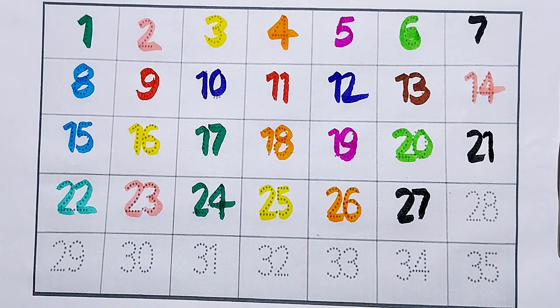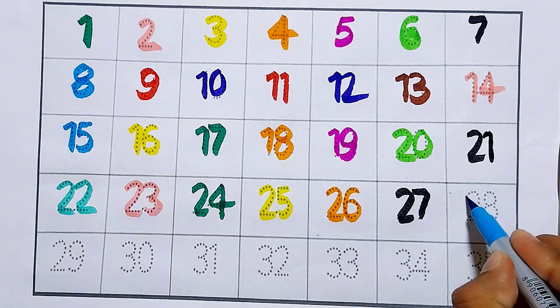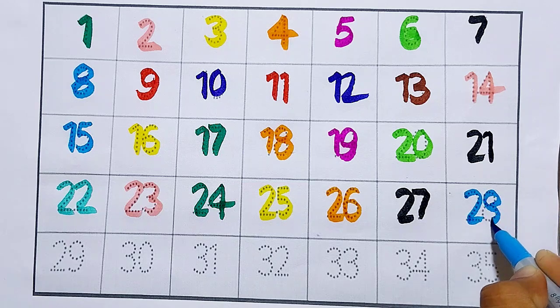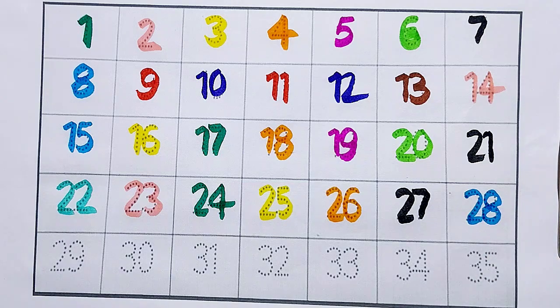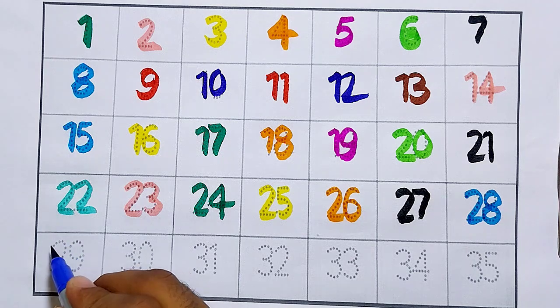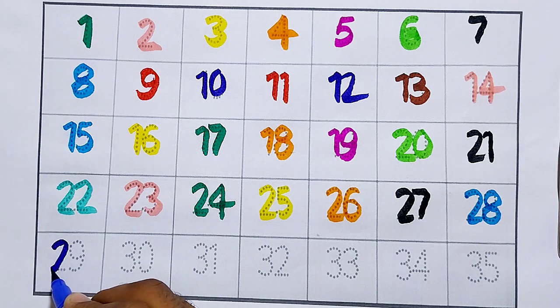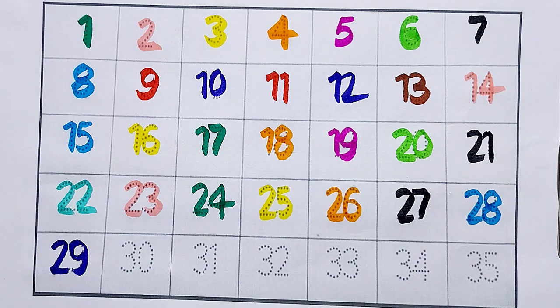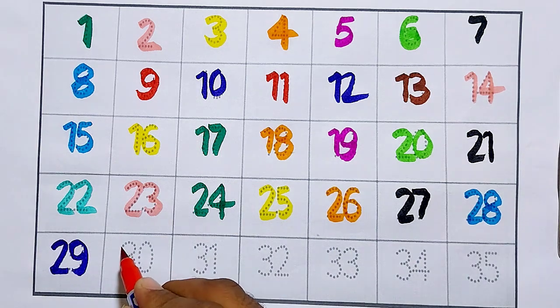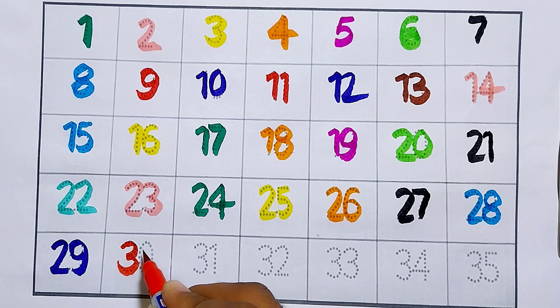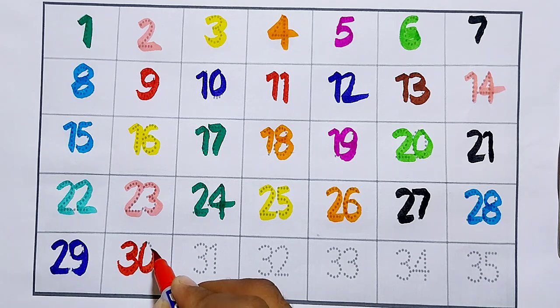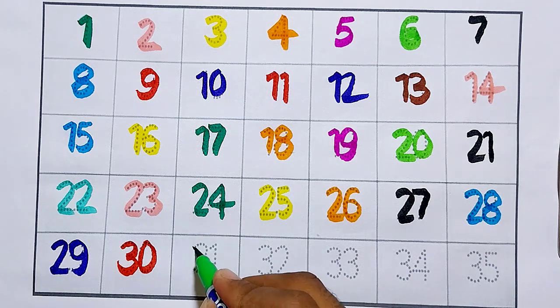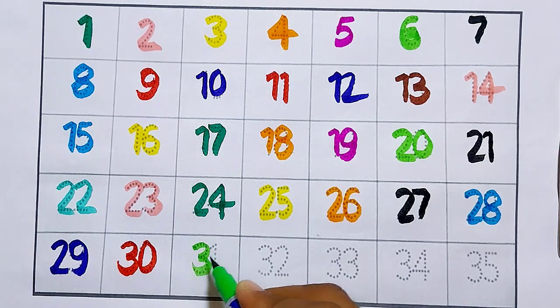Twenty-seven. Twenty-eight. Twenty-nine. Thirty. Thirty-one.